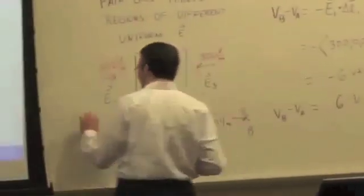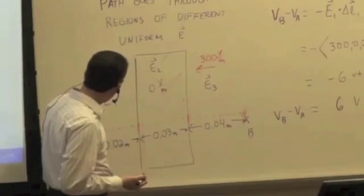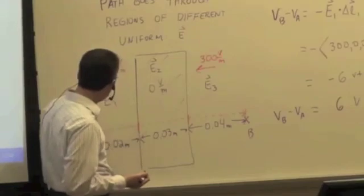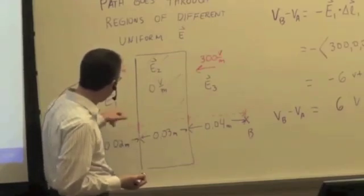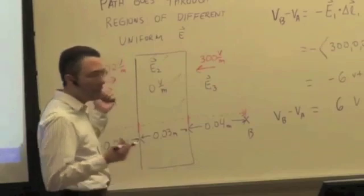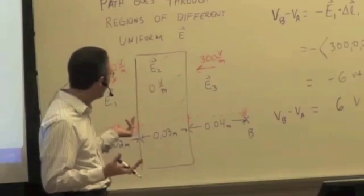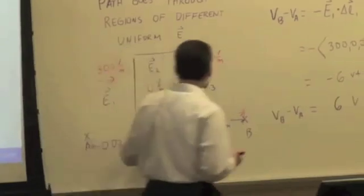So again, the way to think about that is if you let a positive charge go on its own, it would move in the direction of the electric field. There would be positive work done on it. Its kinetic energy would increase. The potential energy then would have to decrease. So the potential would have to decrease. Okay, so that's got to be negative.